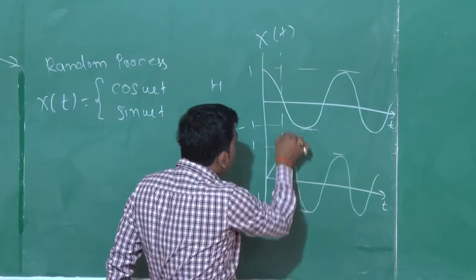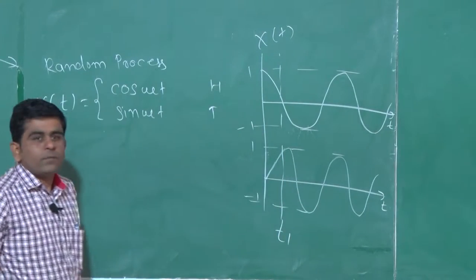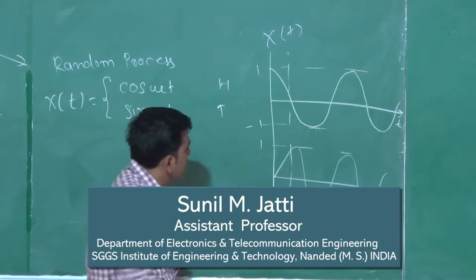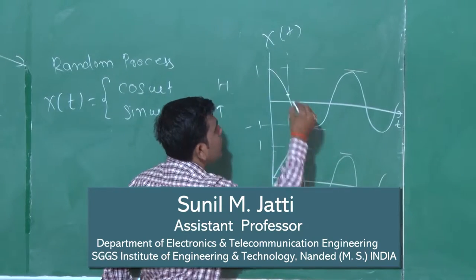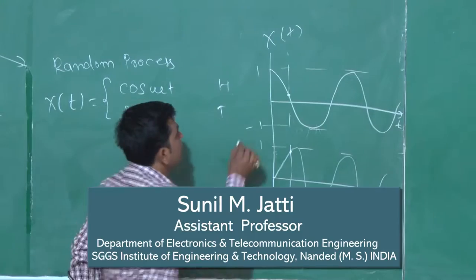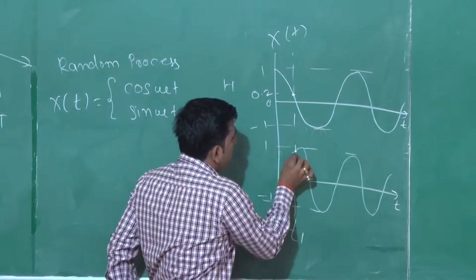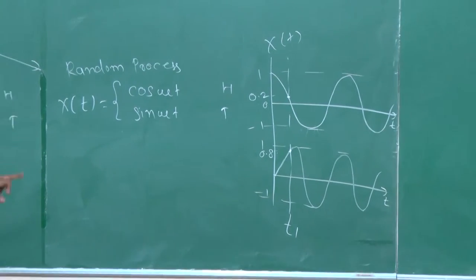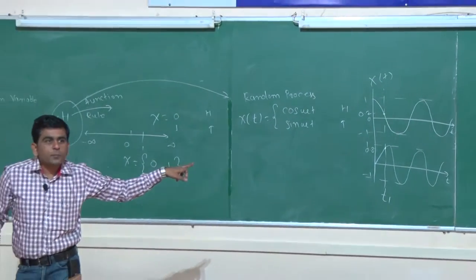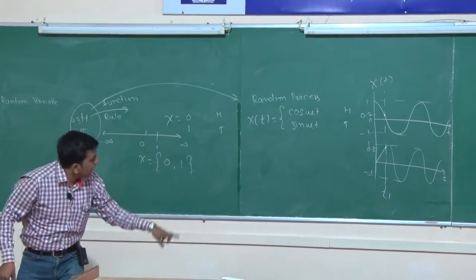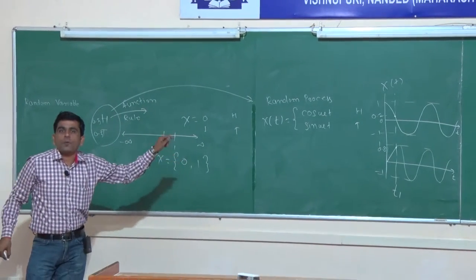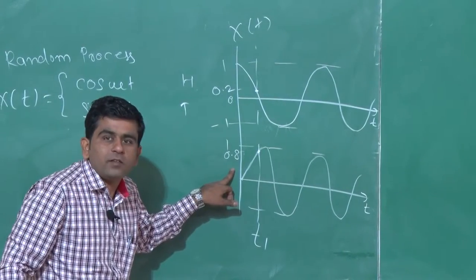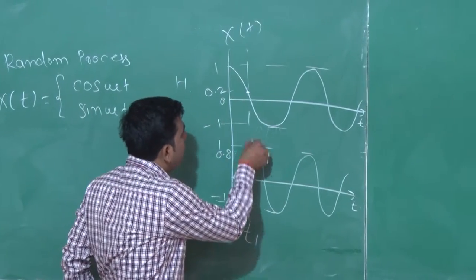Just stand at any point. Suppose at t1, we are standing at this point and just looking upward. It will give two values: this one and this value. This value is greater than 0. Suppose this is 0.2 and this is 0.8. So, head occurs with the value 0.2 and its probability is 0.5. Similarly, tail occurs with the value 0.8 and its probability is 0.5. So here when we are looking, we will get two values.